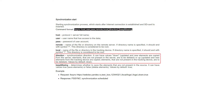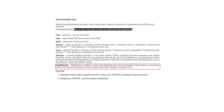The direction parameter specifies the direction of information transfer. Up means transferring data from the memory card to the server; down means transferring data from the server to the memory card. The last parameter, keep_missing, takes the value true if you need to save files in the destination directory that were not in the source directory at the time of copying. If false, all files in the destination directory that were not present in the source directory will be deleted.